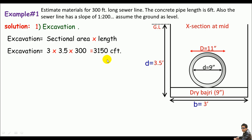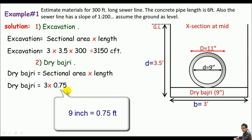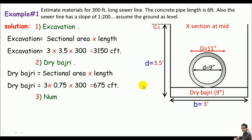Next is the dry bajari. The same formula applies: cross-sectional area times length. The breadth is known and the thickness of this layer is 9 inches, which equals 0.75 feet. So the cross-sectional area is 3 × 0.75, and multiplied by the length of 300 feet gives 675 CFT of dry bajari. Note: we do not apply any depth deduction here due to compaction or other properties.